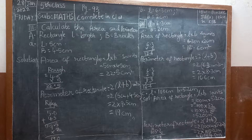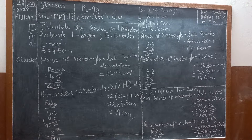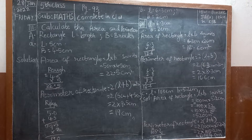They have given the values: L is 5 centimeters, B is 4.5 centimeters. We have to calculate this. First, write the area of rectangle and substitute the values in the formula. We know the area of rectangle is L into B. L value is 5 centimeters, B value is 4.5 centimeters — multiply both: 5 × 4.5.